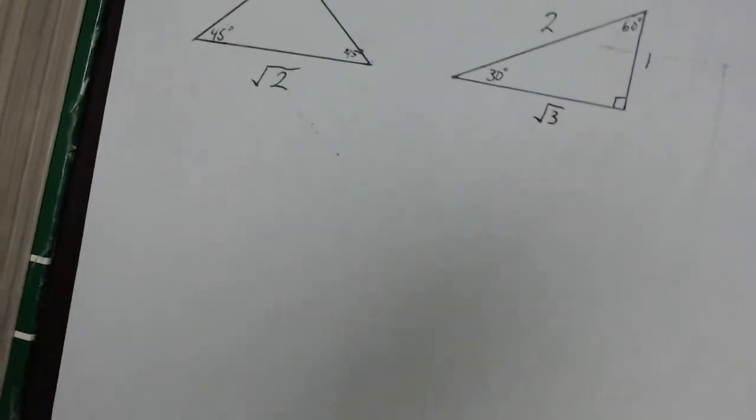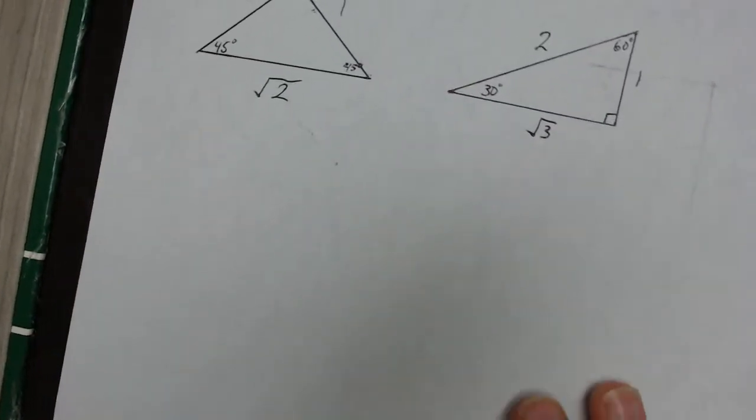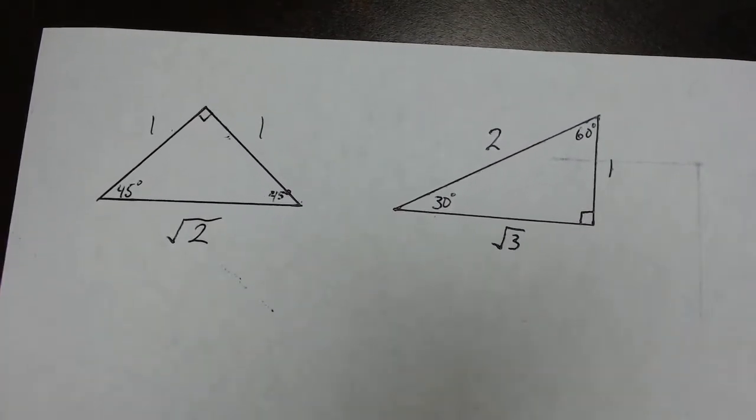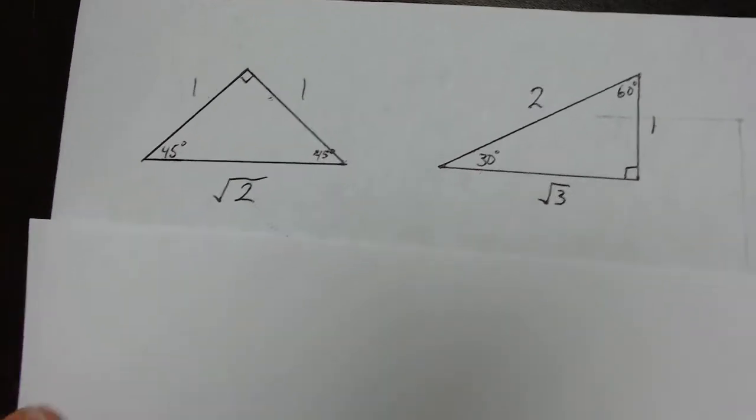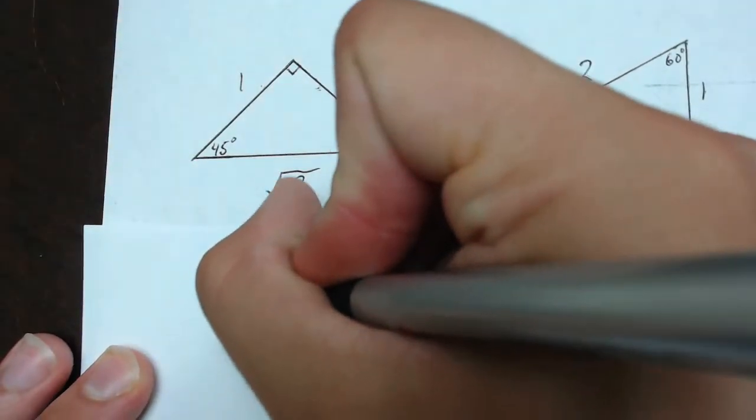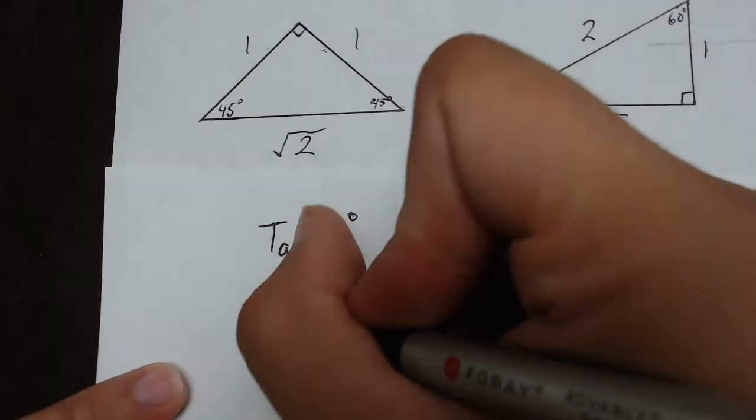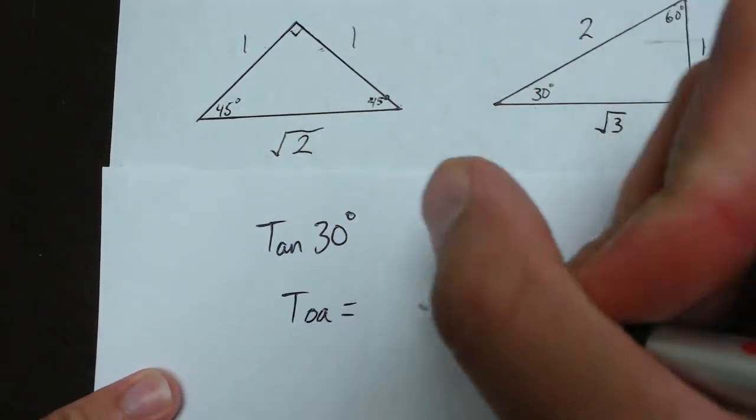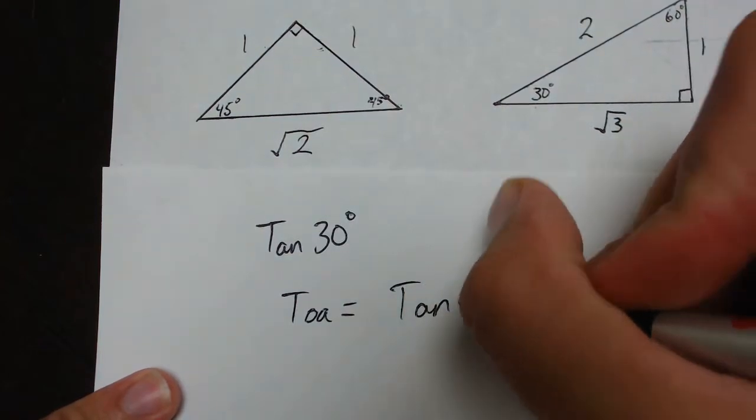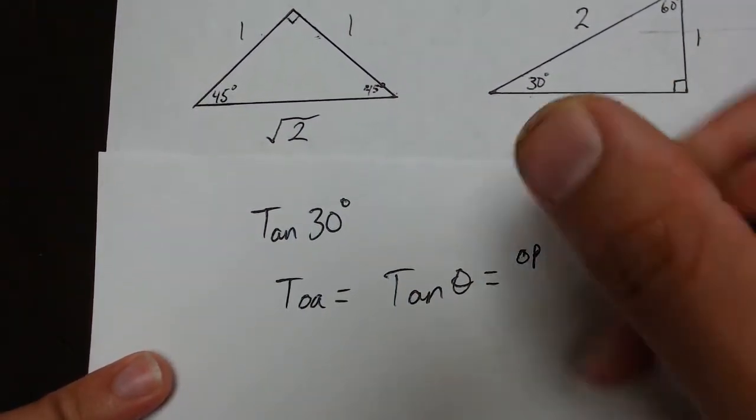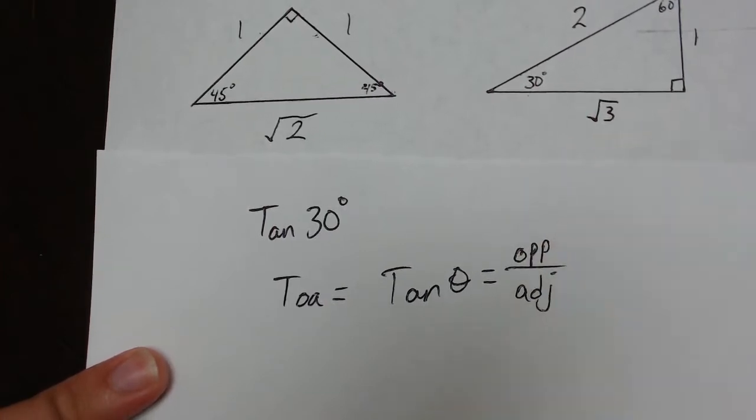Well, if we're doing the tangent of 30 degrees, then we know which reference triangle we're going to need. We are going to need the 30, 60, 90. So to do the tangent of 30 degrees, I'm going to use my SOHCAHTOA rhyme. I remember that tangent equals the opposite over the adjacent side.